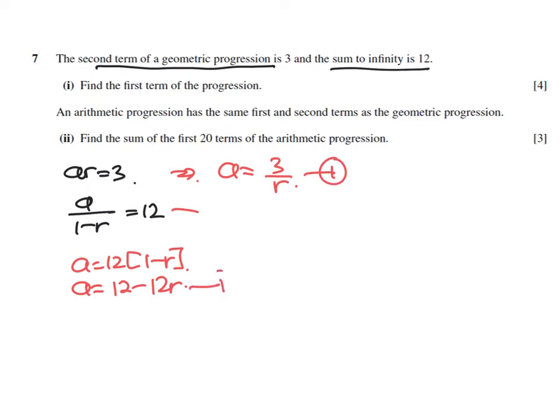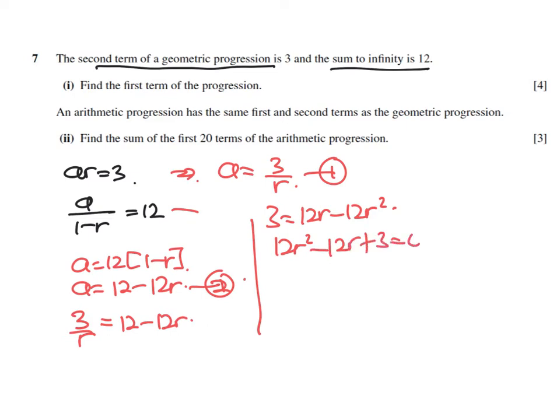So 3 over r equals 12 minus 12r. Now times this r over, bring it over and multiply. So you get 3 equals 12r minus 12r squared.